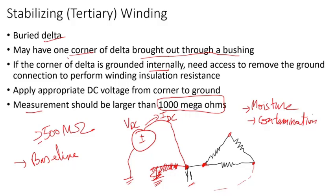Unfortunately, this stabilizing delta sometimes has one corner grounded internally. You cannot apply this test unless you remove that connection from the delta corner to the ground. If it's grounded internally you have to access that inside the tank. It depends - if it's brought up towards the tank cover, you probably have to remove the cover depending on the size of the transformer.